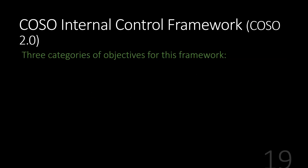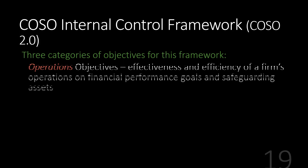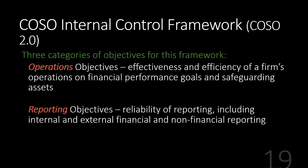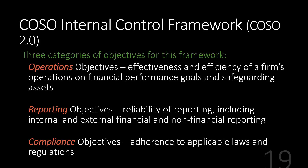From an objective standpoint, we have three categories of objectives. We've got operational objectives — what's going on in the operations of the organization, how do we safeguard assets, how do we promote efficiency and effectiveness. We have reporting objectives — appropriate controls over the reporting process so that reporting is reliable and accurate. And then we want to have compliance objectives — making sure that we adhere to all laws and regulations in the various jurisdictions in which a company operates.